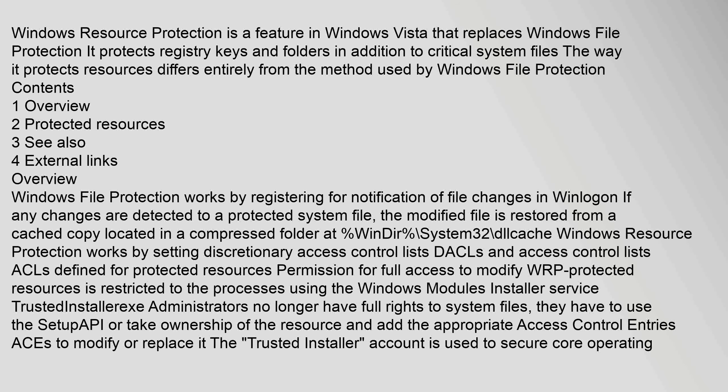Overview: Windows File Protection works by registering for notification of file changes in WinLogon. If any changes are detected to a protected system file, the modified file is restored from a cached copy located in a compressed folder at %windir%\system32\dllcache.